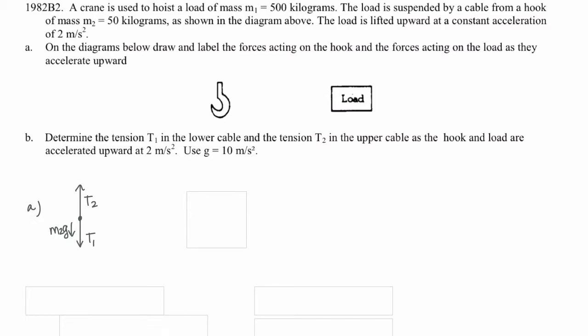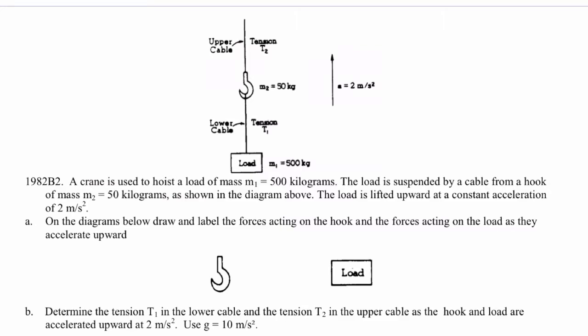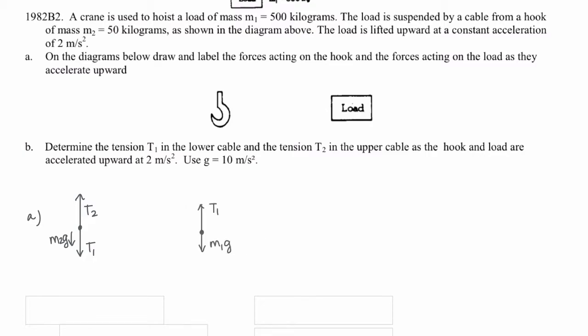So we're going to have three forces in the y direction acting on the hook. And for the load, tension 1 is going to be pulling the load upwards, and the force of gravity is going to be acting downward on the load.